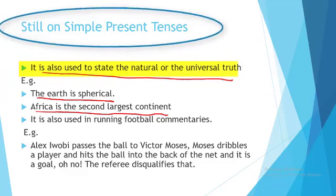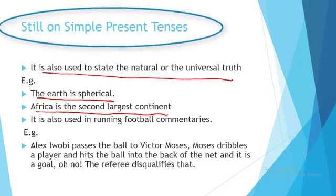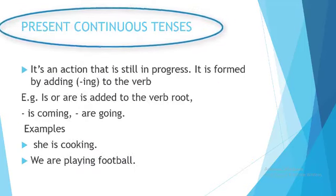The simple present tense is also used in football commentaries. For example: 'Alexi Obi passes the ball to Victor Moses. Victor Moses dribbles the player and hits the ball into the back of the net and it's a goal. The referee disqualifies that.' Every verb used there — passes, dribbles, hits, is, disqualifies — is in the simple present tense form.